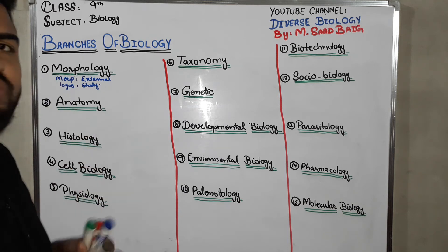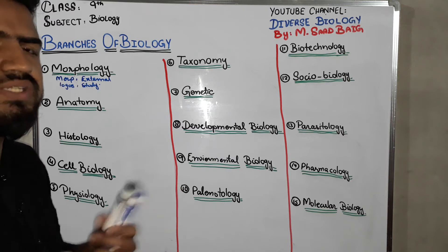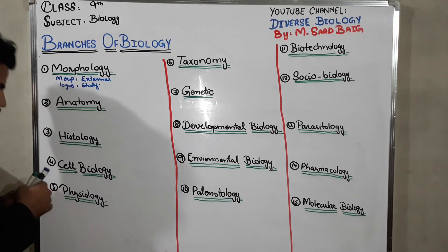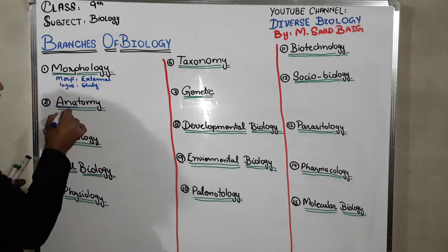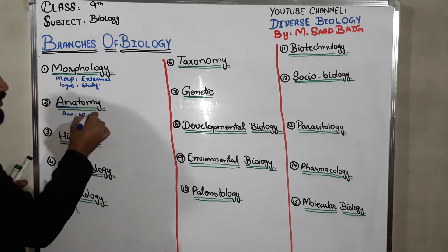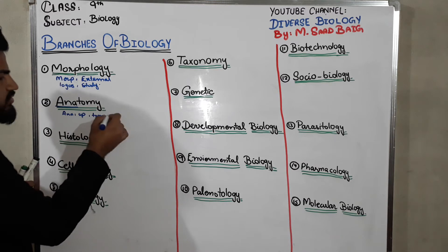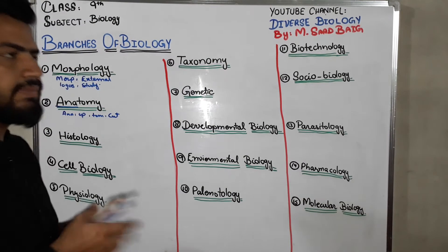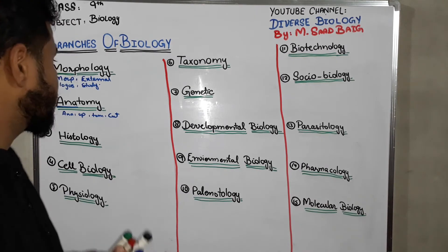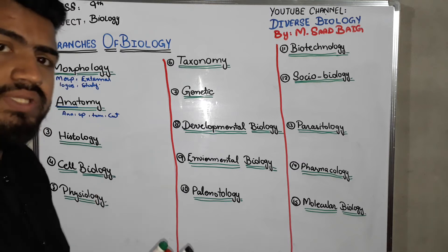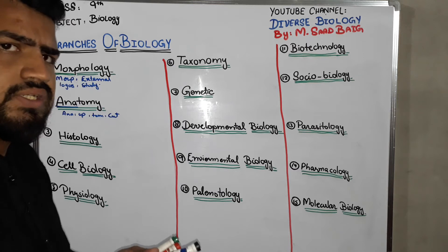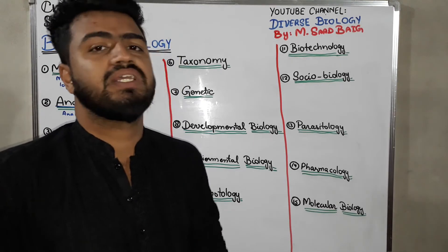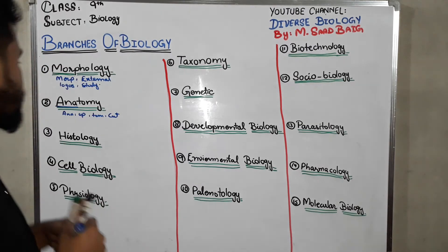Next we have anatomy. Many people pronounce it incorrectly — the correct pronunciation is anatomy. The word anatomy is derived from 'ana' meaning 'up' and 'tomi' meaning 'cut'. So the definition of anatomy is: the study about the internal structure of a living organism. That is, if we cut anything and look at the internal structure of any organism, that is known as anatomy.